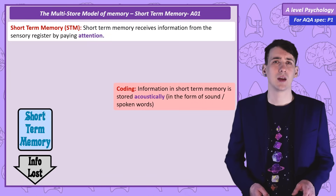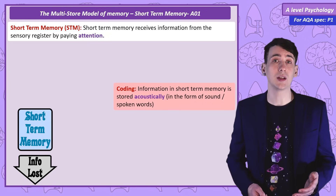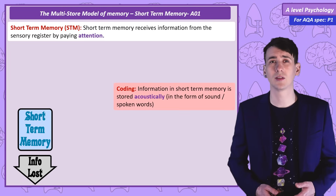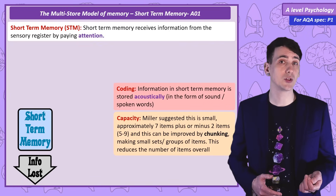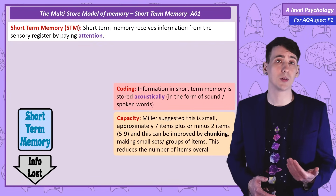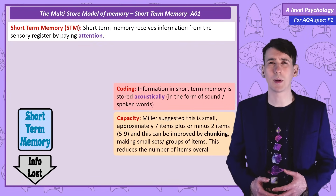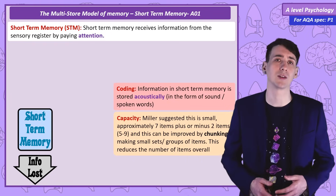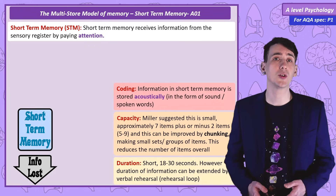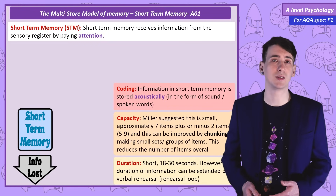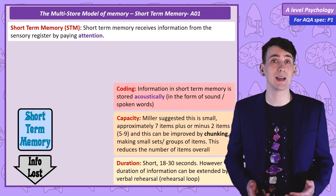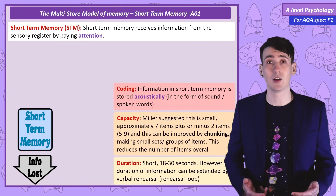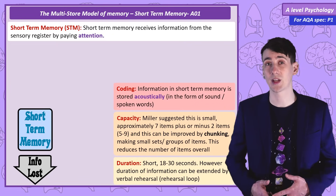It feels like that — if you need to remember a list, you may repeat it over and over again in your head with an inner voice. The capacity of short term memory is 7 items plus or minus 2, so some people have a slightly worse short term memory and some a slightly better one. The duration of short term memory is between 18 and 30 seconds, meaning information that isn't maintained by sub-vocal repetition is lost after that time.